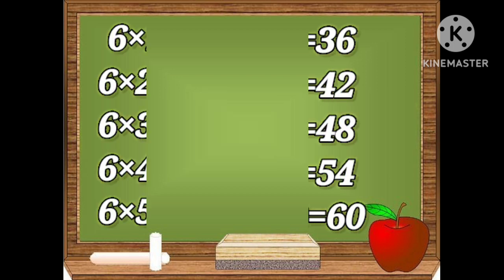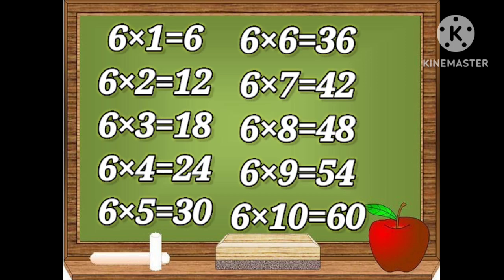Let's repeat the table. Six ones are six, six twos are twelve, six threes are eighteen, six fours are twenty-four, six fives are thirty, six sixes are thirty-six, six sevens are forty-two, six eights are forty-eight, six nines are fifty-four, six tens are sixty.